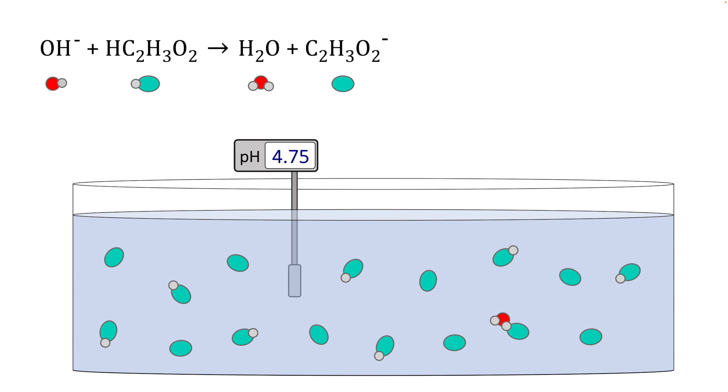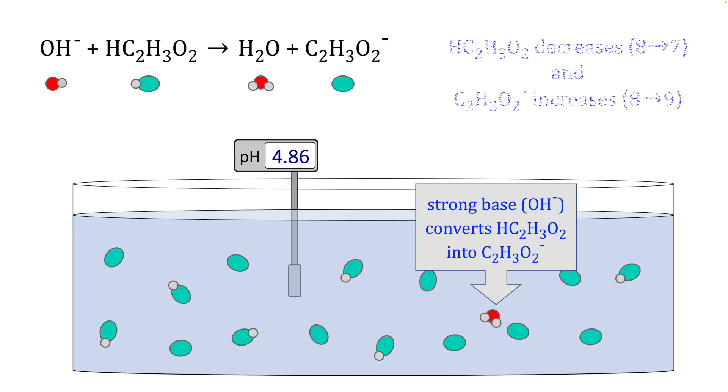Each hydroxide ion removes the acidic hydrogen from an acetic acid molecule and essentially converts it into acetate ion, its conjugate base. This ends up decreasing the number of acetic acid molecules, in this case from the initial 8 to 7, and it increases the number of acetate ions from the initial 8 to 9. We now have a solution that has more acetate ion and less acetic acid than it originally had.